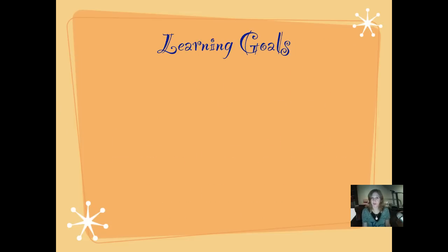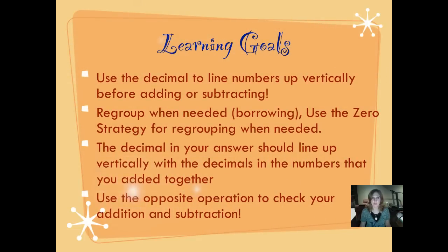Here are our learning goals for today for our independent lessons. Use the decimal to line numbers up vertically before adding or subtracting. Do you realize that these are very similar to the same goals we had when we were adding decimals? Regroup when needed. We're using borrowing this time. Use the zero strategy for regrouping when you have lots of zeros in a row. The decimal in your answer should line up vertically with the decimals in the number that you added together. And use the opposite operation to check your addition and subtraction.